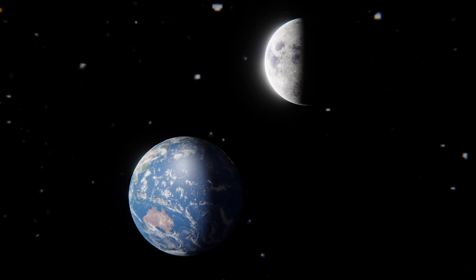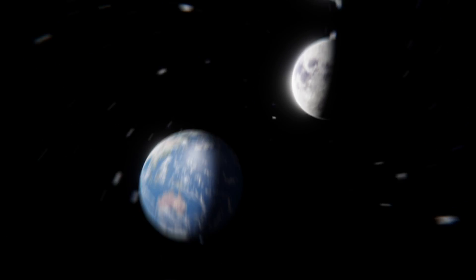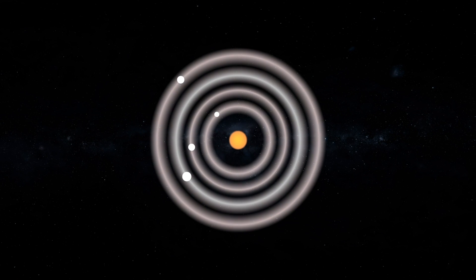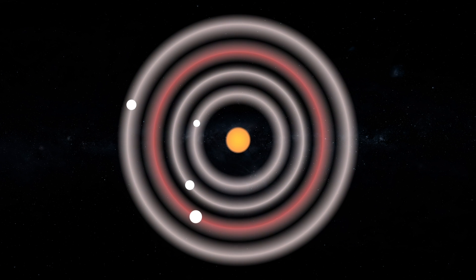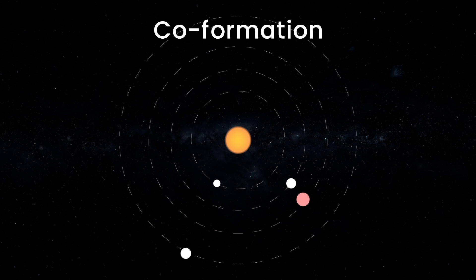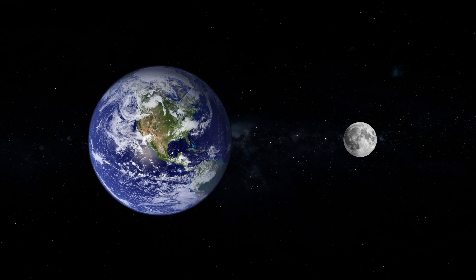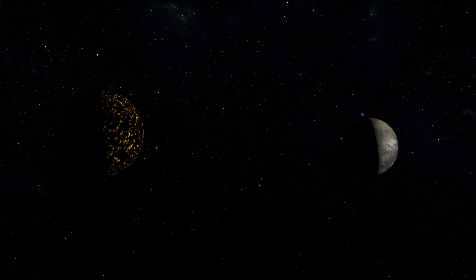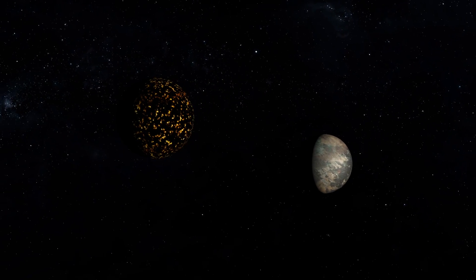Some astronomers think our satellite was created side by side with the Earth. The idea is that both were formed at about the same time, from the same gas and dust, and at the same part of our solar system's protoplanetary disk. This theory is called co-formation, and it fits because of the isotopic similarities between the two space objects, but it cannot explain the difference in the size of their iron cores.